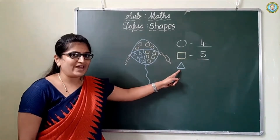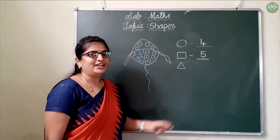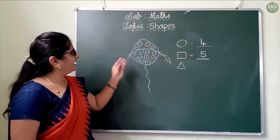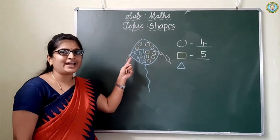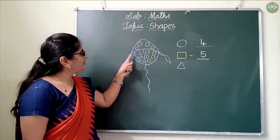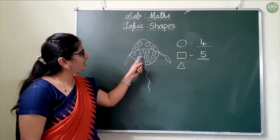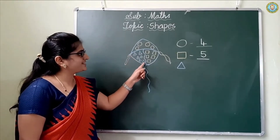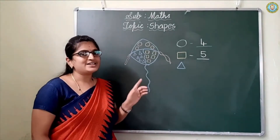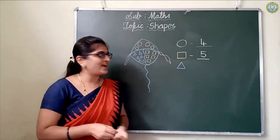Which shape is it? Triangle. Very good. Now you count the triangles. See here, how many triangles are there? Start counting: one, two, three, four, five, six. How many triangles are there? There are six triangles.